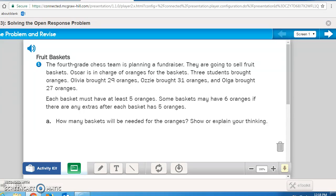For these next few problems, you're going to need Math Masters pages 234 and 235. So pause the recording now and go over to the file and get those out. Turn it back on when you're ready to read along silently as I read the problem out loud. It says, The 4th grade chess team is planning a fundraiser. They are going to sell fruit baskets. Oscar is in charge of oranges for the basket. Three students brought oranges. Olivia brought 29 oranges. Ozzy brought 31 oranges. And Olga brought 27 oranges. Each basket must have at least 5 oranges. Some baskets may have 6 oranges if there are any extras after each basket has 5 oranges. So how many baskets will be needed for the oranges? Show or explain your answer. Again, pause the recording to see if you can figure this out. If not, turn it back on and listen to what I have to say.